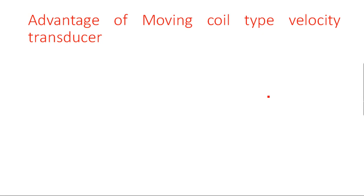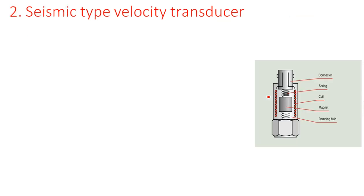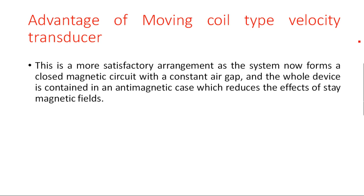Advantage of moving coil type velocity transducer: this is a more satisfactory arrangement as it forms a closed magnetic circuit with a constant air gap, and the whole device is contained in an electromagnetic case which reduces the effect of external magnetic fields. This is an advantage compared to the moving magnet type. In the next class, I will explain the remaining types of linear velocity measurement. Thank you.